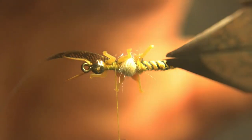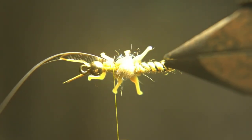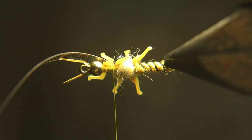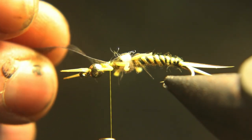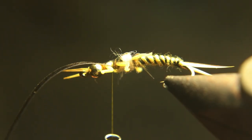Behind these legs, you want to do the same thing. You want to tie it down, then pull it back and tie over it, cinch it down. This really makes a really cool step in the wing case, really looks natural.